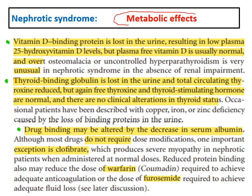Metabolic effects of nephrotic syndrome: vitamin D-binding protein is lost in urine, leading to low plasma 25-hydroxy vitamin D, but free vitamin D (the active form) is usually normal, and overt osteomalacia or hypercalciuria is unusual. Drug binding is also affected — protein-bound drugs such as warfarin and diuretics behave differently in hypoalbuminemia.